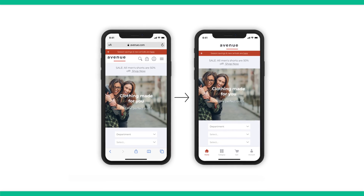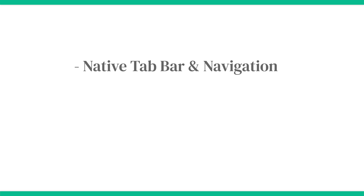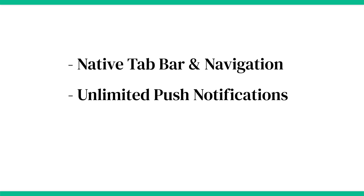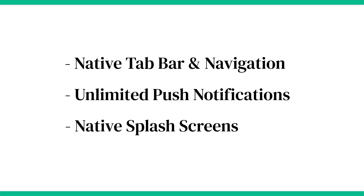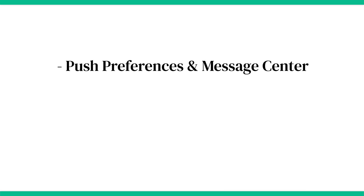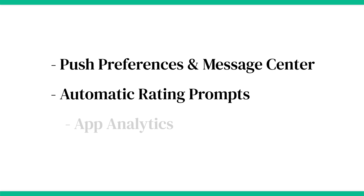Canvas creates a wrapped mobile version of your React web app with many of the features you would get with a native mobile app. These features include a native tab bar and navigation, unlimited push notifications on iOS and Android, native splash screens and loading indicators, push preferences and a message center for more effective notifications, automatic rating prompts, and app analytics. The result is the simplest and most effective version of your mobile web app and the fastest way to get your app on the App Store and Google Play.